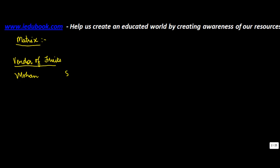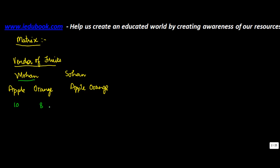Let's say there is a vendor of fruits. There is Mohan and Sohan. Mohan sells apples and oranges, and Sohan also sells apples and oranges. Suppose you were told that Mohan has ten apples and eight oranges. There are two ways to write this information: a complete sentence, or in the form of a bracket.